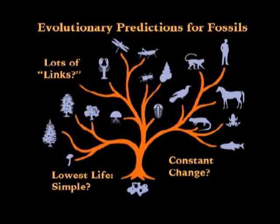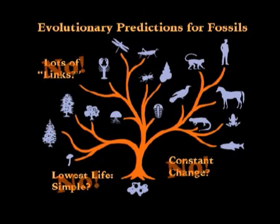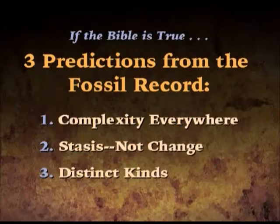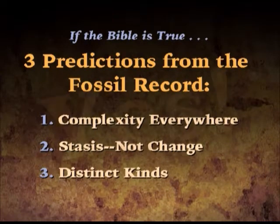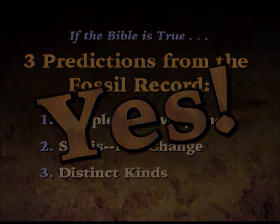Evolution predicts that we have constant change, lots of links, lowest life forms — guess what? Resounding no in every one of them. The Bible predicts we're going to have complexity everywhere we look, there's going to be stasis not change, we're going to have distinct kinds — and yes, that's exactly what we see.